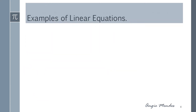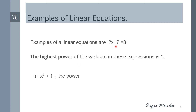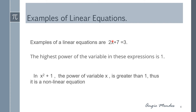Now let us look at some examples of linear equations. An example is 2x plus 7 is equal to 3. The highest power of the variable in this expression is 1, meaning x is raised to the power of 1. But in the expression x squared plus 1, the power of x is 2, so it is not a linear equation.